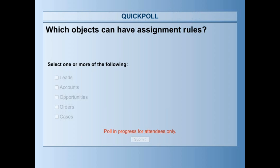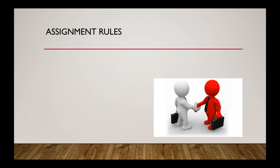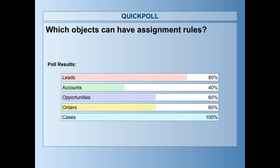I'm posting a link in the chat to our YouTube channel so anyone can pull up our past sessions. It looks like 100% of you said cases. We also got orders, opportunities, accounts, and leads. The correct answers are leads and cases — these are the only two objects that have assignment rules.